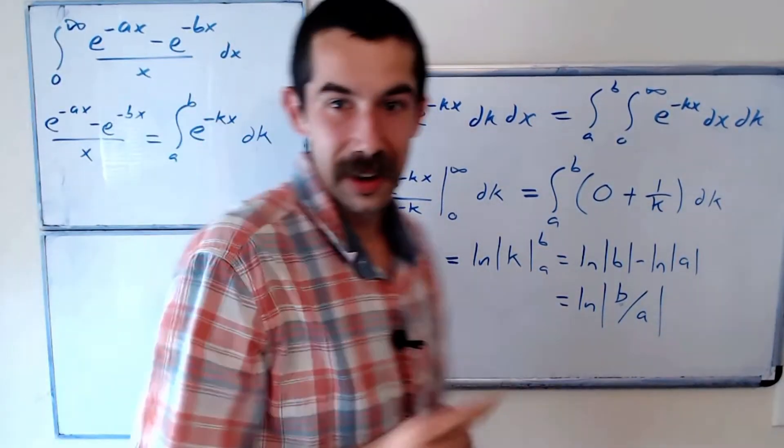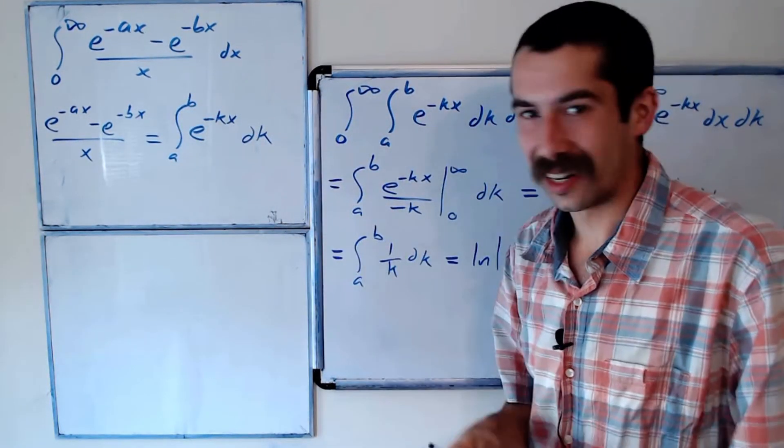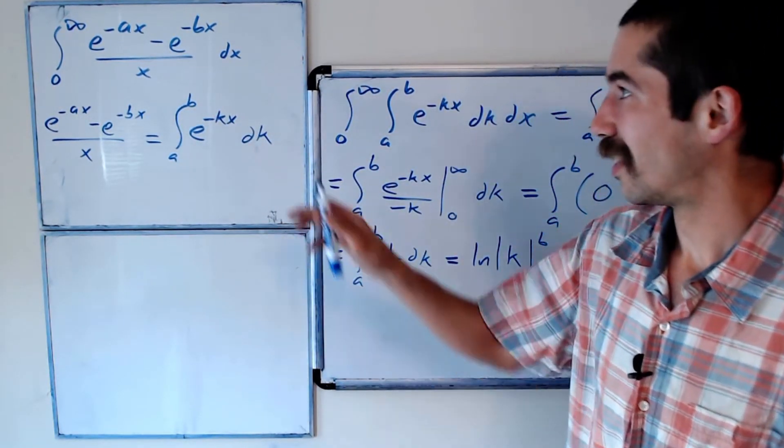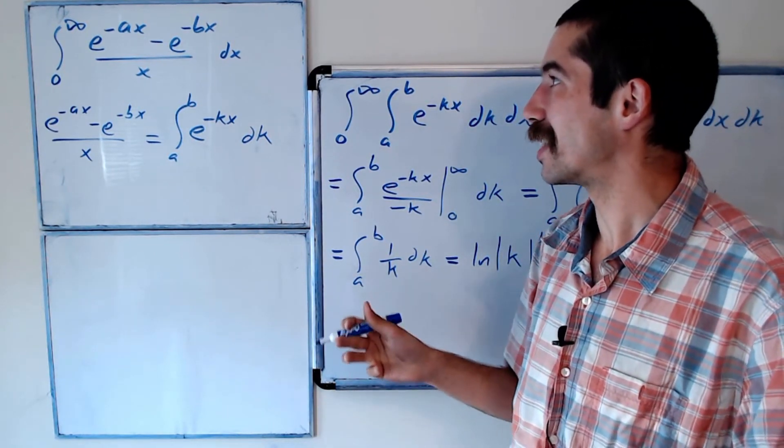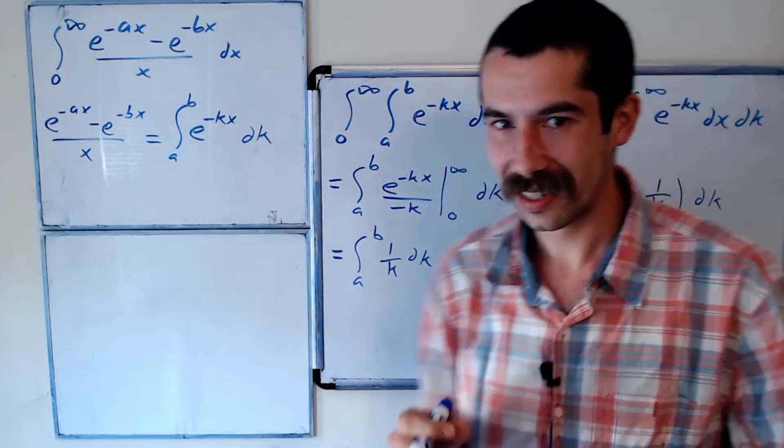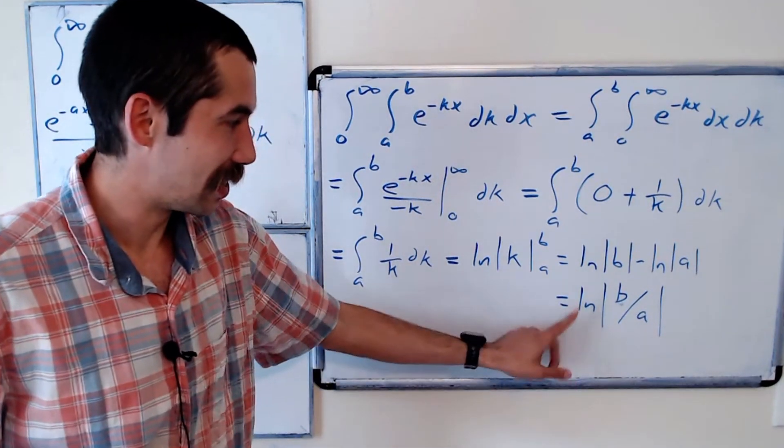So this nasty looking integral here, integral from 0 to infinity of e to the negative ax minus e to the negative bx over x dx, is equal to this.